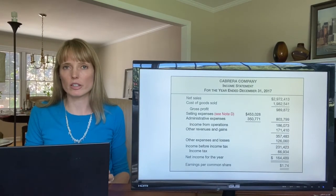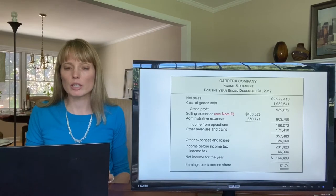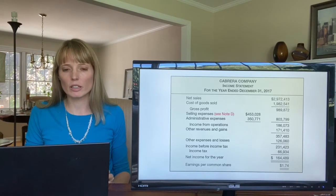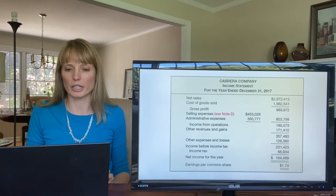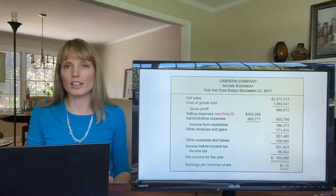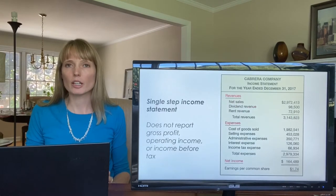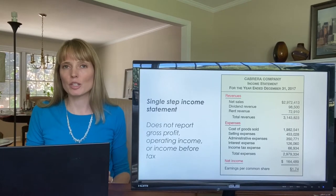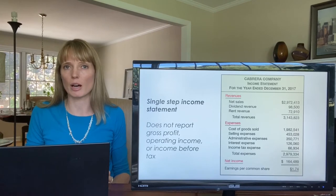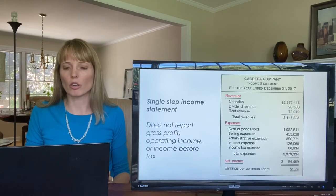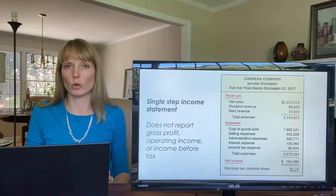Here we see another example of a multi-step income statement. We see income from operations about halfway down, then a line for other revenues and gains and a line for other expenses and losses — this is the non-operating section. We also see income tax expense, net income, and earnings per share at the bottom. Compare that to the single-step income statement, which simply reports all revenues together at the top regardless of their source, and all expenses — including interest expense and income tax expense — reported together, with one total for net income.